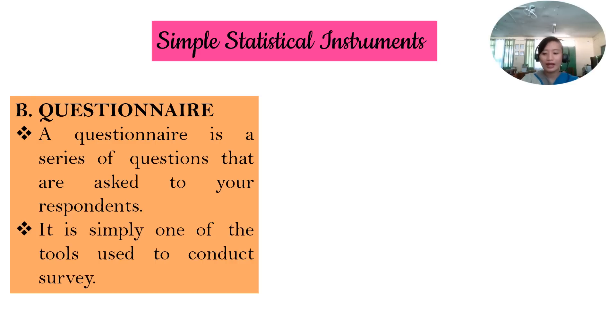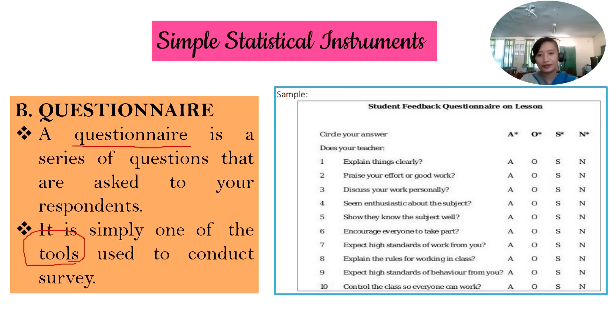And the other type of statistical instrument or another statistical instrument that we can use is the questionnaire. It is a series of questions that are asked to your respondents. It is simply one of the tools used to conduct a survey. Usually this is a printed copy. And then there are a series of questions that the respondents have to answer. Here is an example.